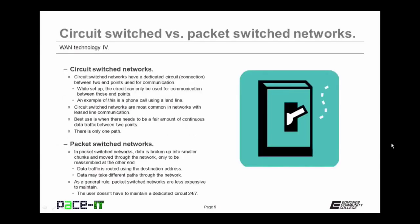Circuit-switched networks have a dedicated circuit between two endpoints that is used for communication. While set up, the circuit can only be used for communication between those ends. Circuit-switched networks are most common in networks with leased line communication channels. They're best used when there needs to be a fair amount of continuous data traffic between the two endpoints, and with circuit-switched networks, there is only one path for the data to take.